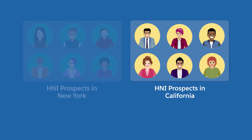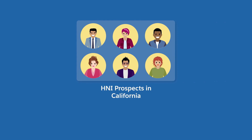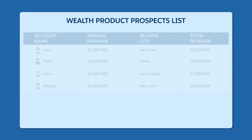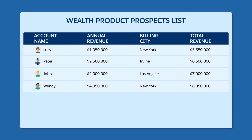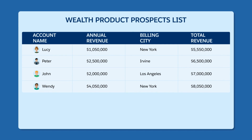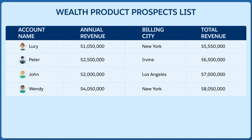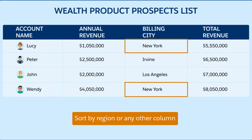For example, as a financial advisor, you can create an actionable list of high-net-worth individuals for wealth plan outreach initiatives. You can use this actionable list to target prospects for wealth products designed for their segment. You can sort and contact prospects by region to perform outreach actions efficiently.